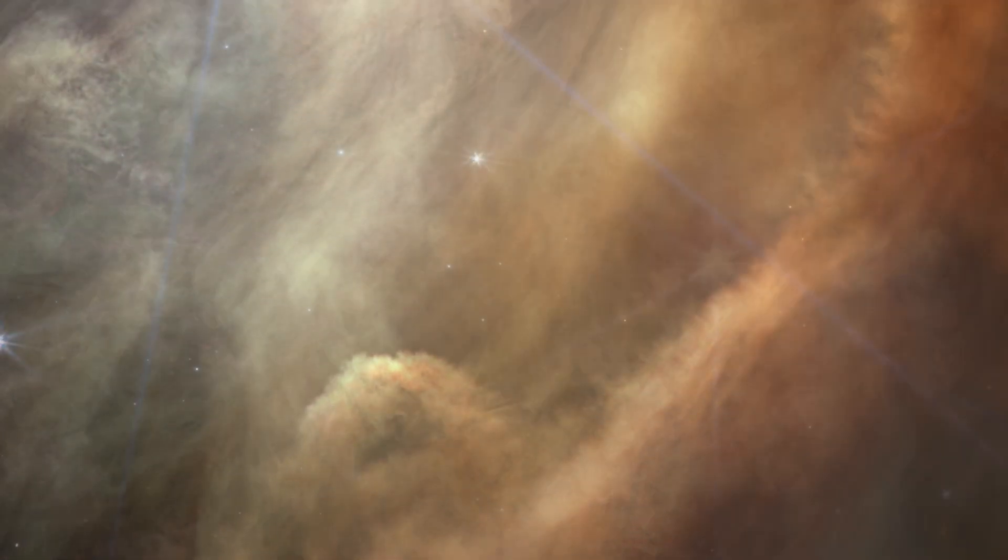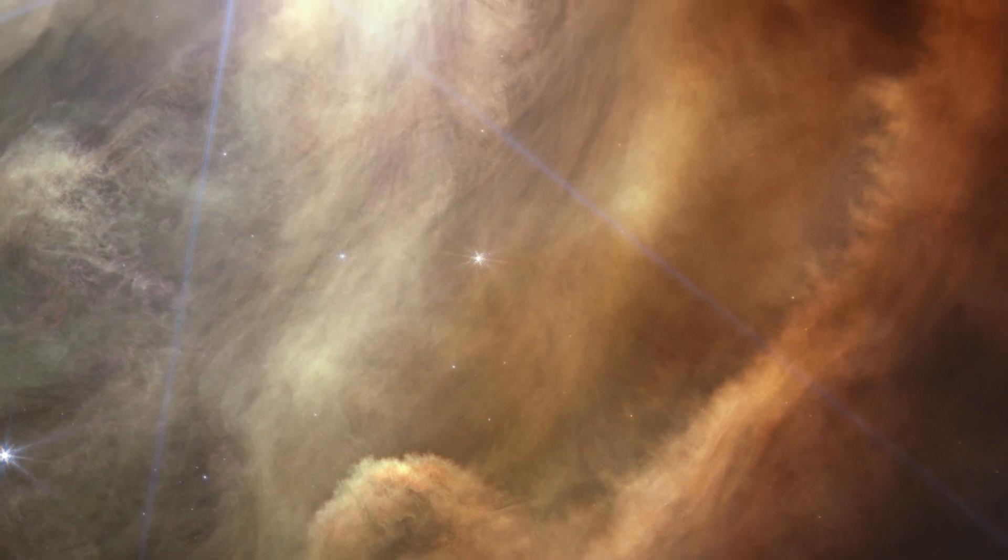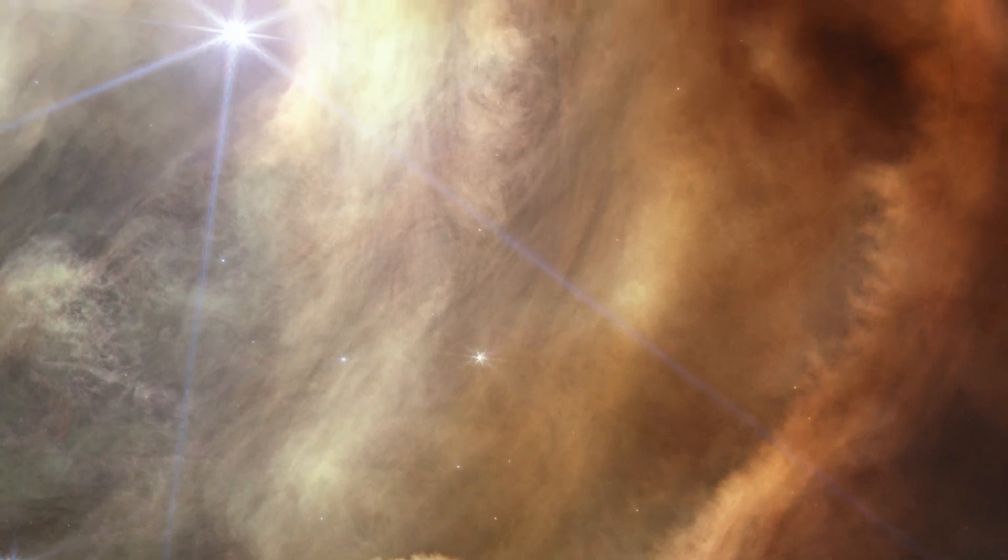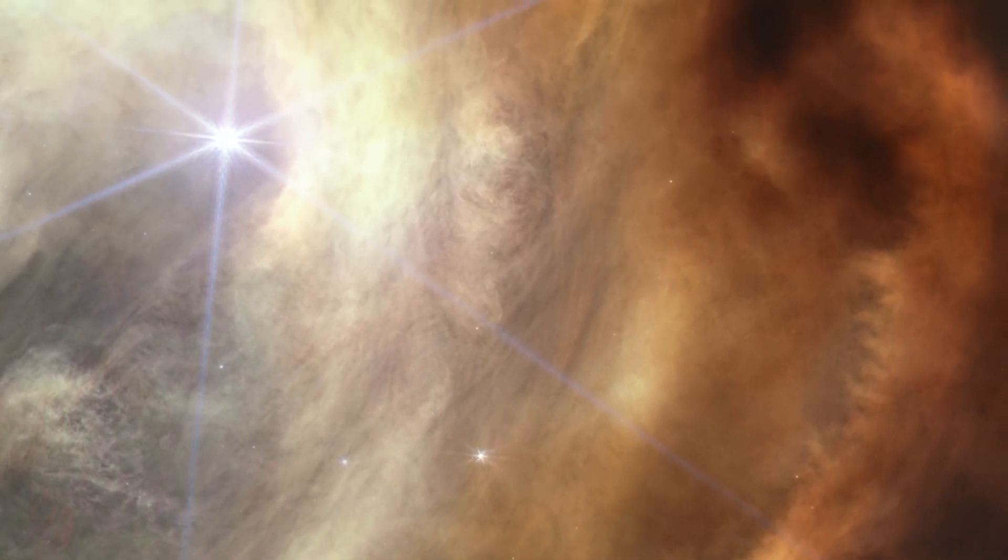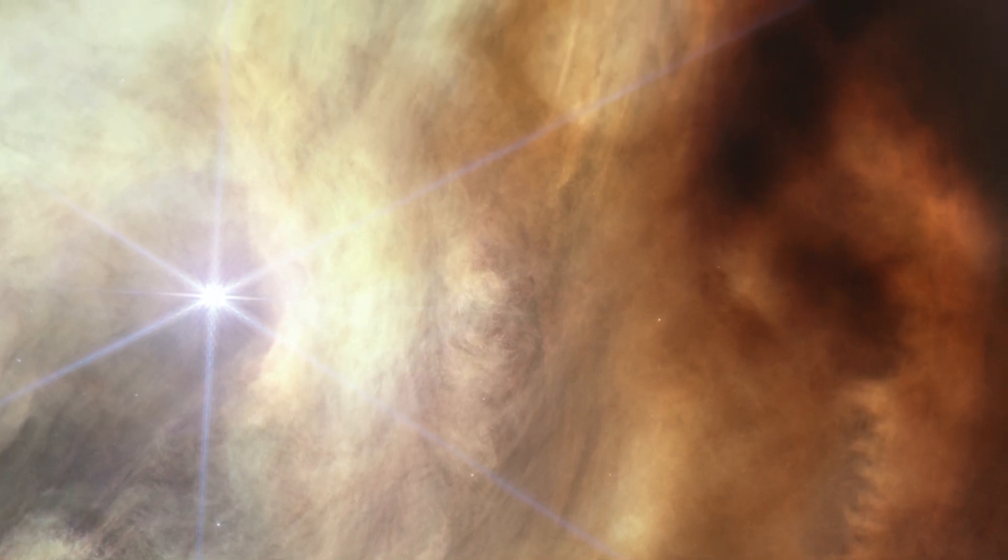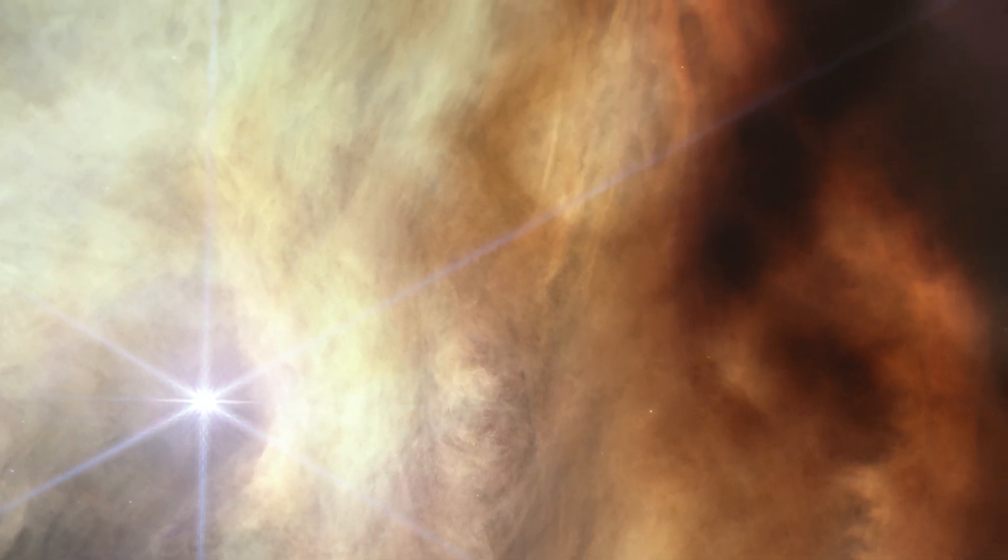The yellow-orange color comes from tiny sooty grains that astronomers call polycyclic aromatic hydrocarbons. Streamers of gas and dust form structures and textures unlike anything we have seen before.